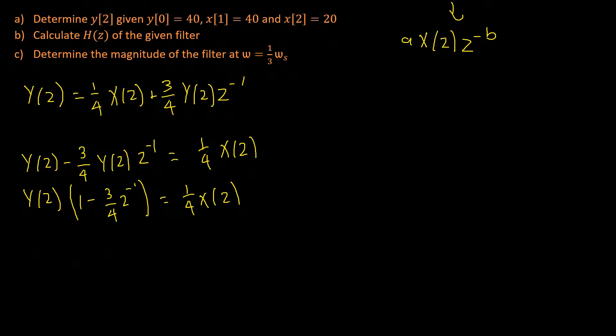Okay, so now we can simply divide both sides by x of z and the coefficient on our y of z term, which will give us y of z.